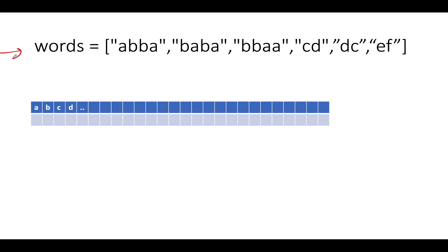Let's take the example: we have the strings 'aabb', 'abba', 'babb', 'bbaa', 'cd', 'dc', and 'ef'. I slightly changed the example so that you get a good hold of the concept.